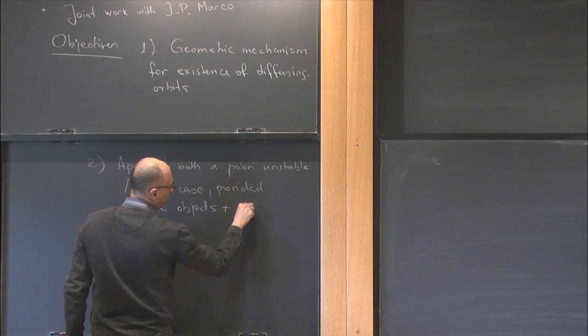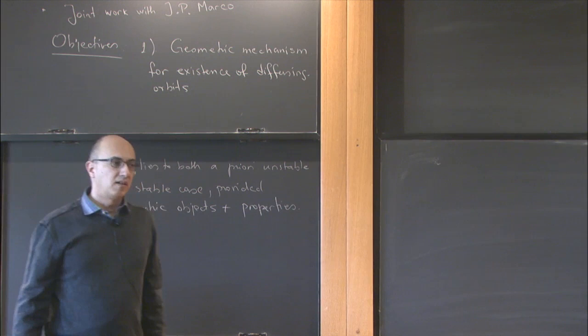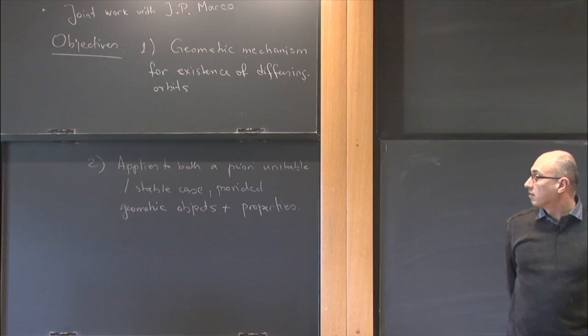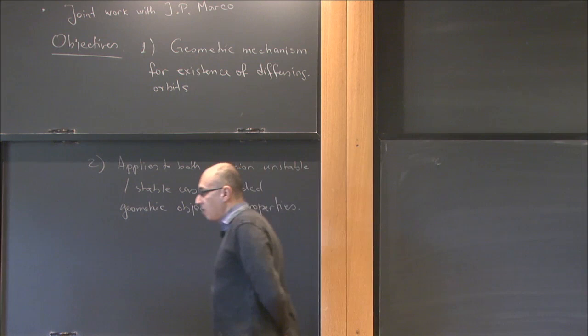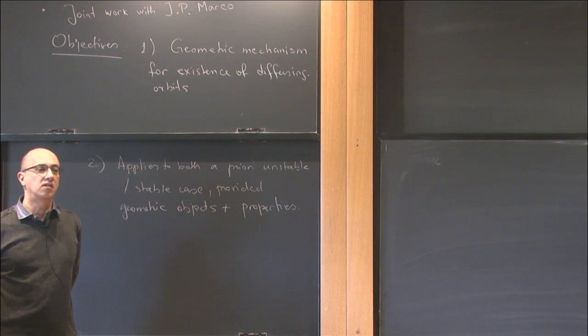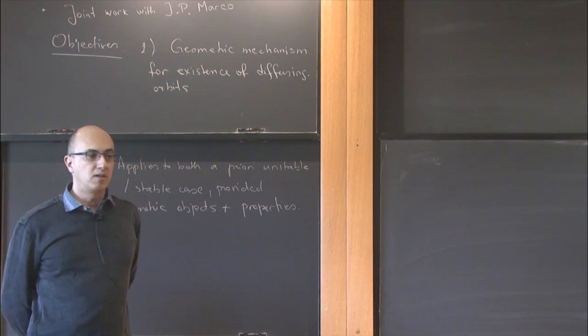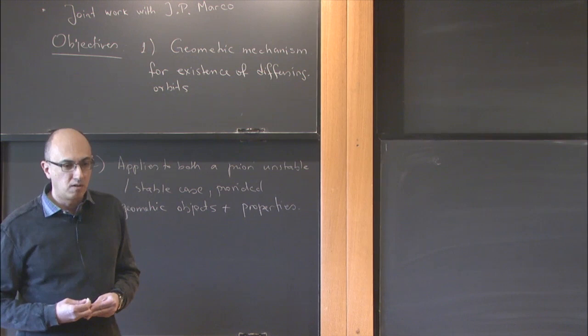This mechanism is intended to apply to both the a priori unstable and a priori stable case, provided the geometric objects and properties are established. In the a priori unstable case, it's quite well known how one obtains the geometric skeleton that organizes the dynamics. In the a priori stable case, this is more recent and requires much more work. I'm going to refer to the geometric structures provided by the work of Jean-Pierre Marcaux.